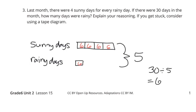Adding those up: six, twelve, eighteen, twenty-four, thirty total days, divided into five for the ratio. So we had twenty-four sunny days and six rainy days. The question asked how many days were rainy — six rainy days. Hopefully the other information helps you solve similar questions as well.